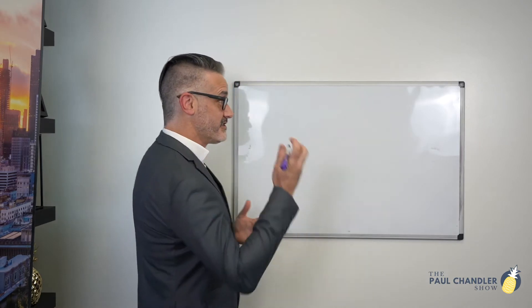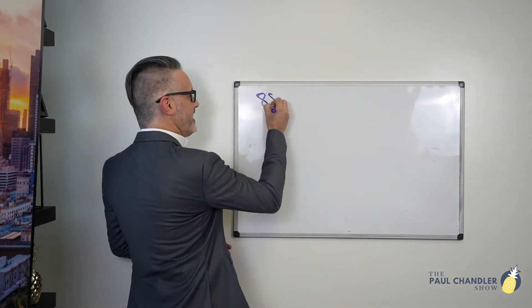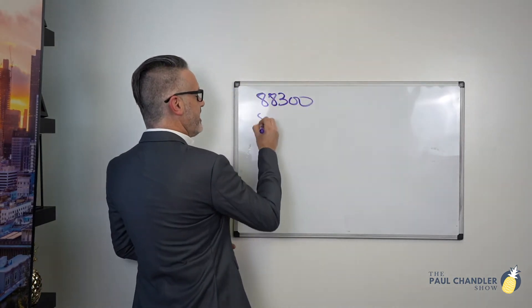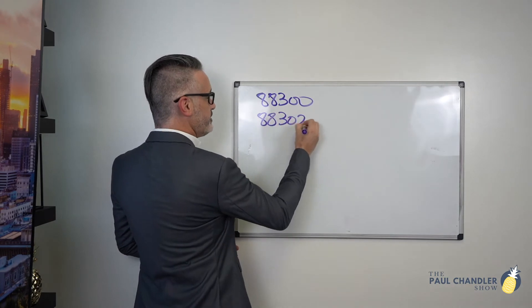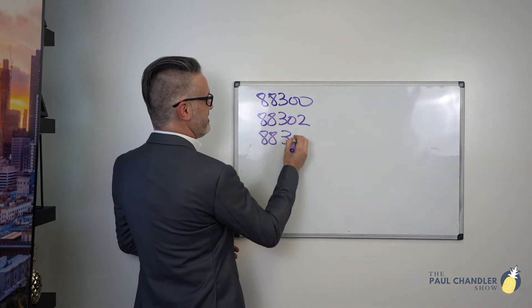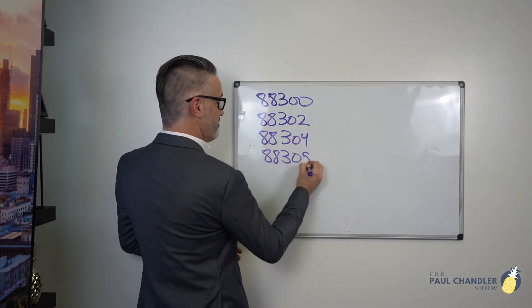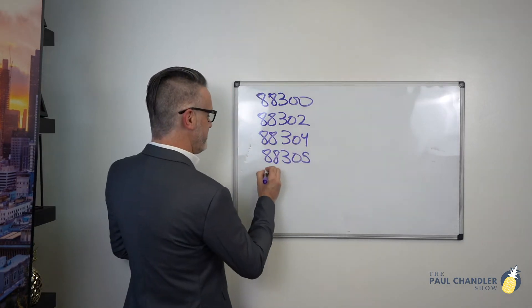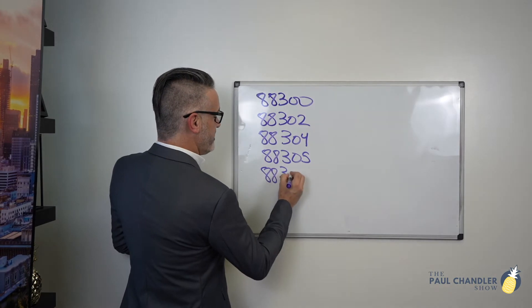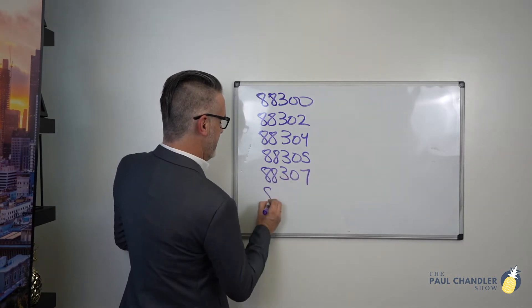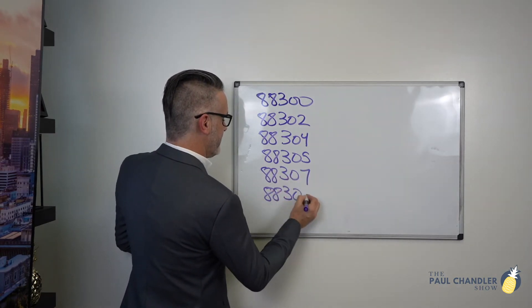Welcome back everyone. Tonight we're going to learn about surgical pathology coding, or simply known as surgical path. We only have six codes that we're looking at, which is the great part about it. We have 88300, 88302, 88304 — and they love to skip around — 88305, 88307, and 88309.